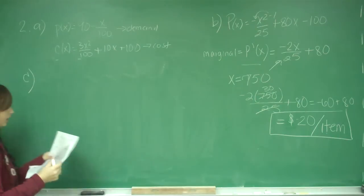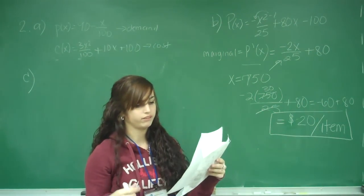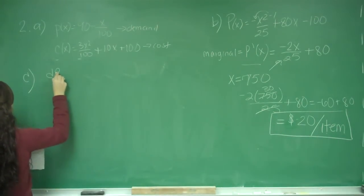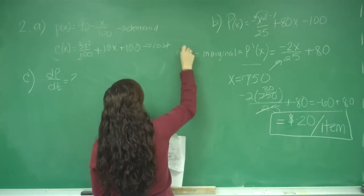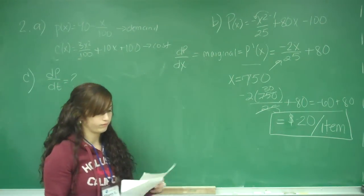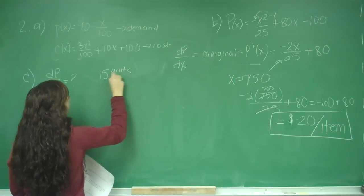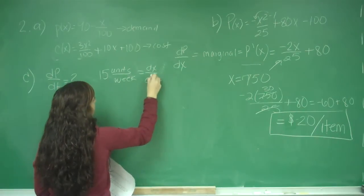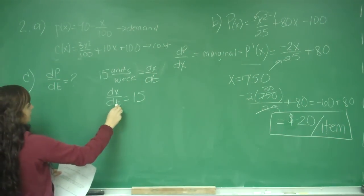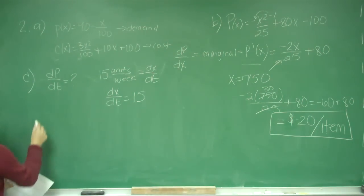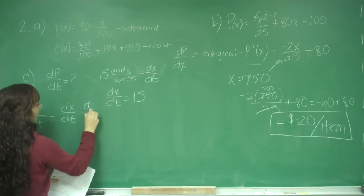For part C, suppose management decides to increase production by 15 units per week when the production level is 750. We need to find dP/dt. What we found earlier, the marginal profit, was dP/dx. They're increasing production by 15 units per week, so dx/dt = 15, where x is units and t represents time in weeks. So dP/dt = (dx/dt) × (dP/dx), because the dx terms cancel, leaving dP/dt.